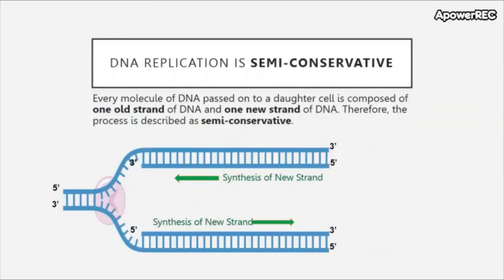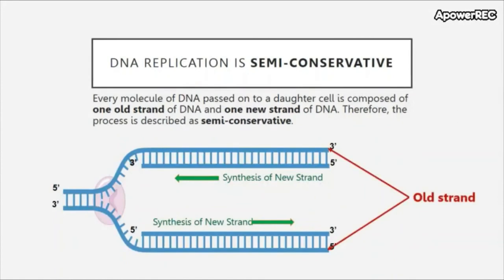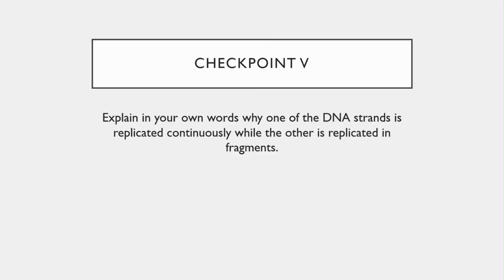In this process, DNA replication occurs on both the top strand and the bottom strand of the double-stranded DNA. We preserve the old strands while making new strands, and because of that we call this semi-conservative replication — the new DNA molecule is part old and part new. Checkpoint five: explain in your own words why one of the DNA strands is replicated continuously while the other is replicated in fragments.